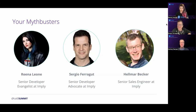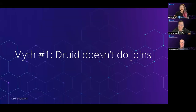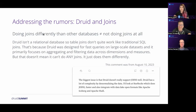Today we're going to talk about common misconceptions about Apache Druid — what it should be used for, what it maybe shouldn't, and what's just a rumor or myth. One that keeps coming up is that Druid doesn't do joins, but that's not actually true. Druid does do joins — it just does them a little differently because it's not a relational database, so table joins don't work quite like traditional SQL joins.